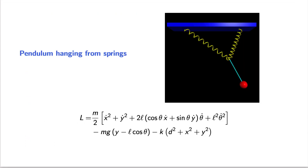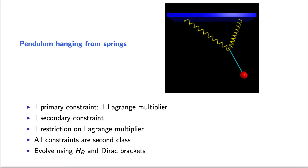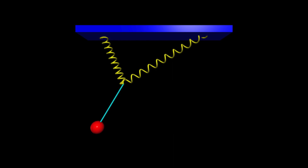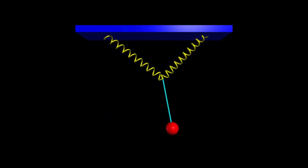I'd like to show some applications of the Dirac-Bergman algorithm to physical systems in classical mechanics. The first system is a pendulum attached to two springs. The generalized coordinates are the angle theta of the pendulum rod and the Cartesian coordinates of the point where the springs connect to the rod. This Lagrangian is singular. Applying the algorithm, we find one primary constraint and one Lagrange multiplier, one secondary constraint, and a restriction on the Lagrange multiplier. The two constraints are second class, so they can be eliminated using Dirac brackets. The simulation shown uses equations of motion generated by the reduced Hamiltonian and Dirac brackets.